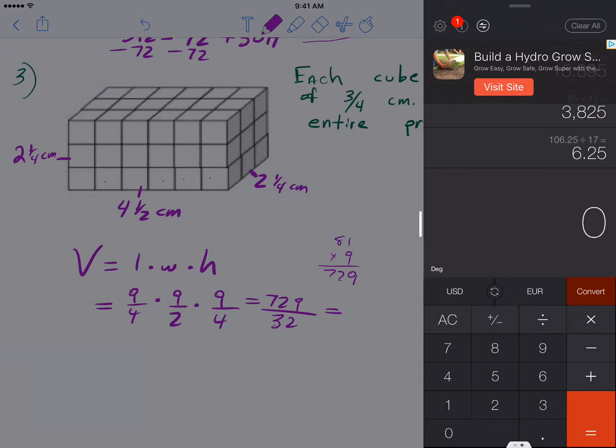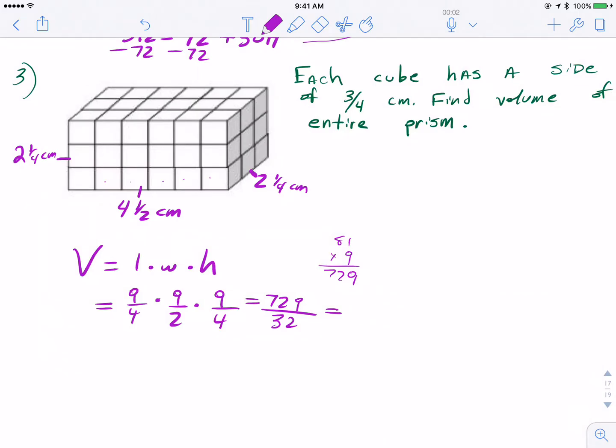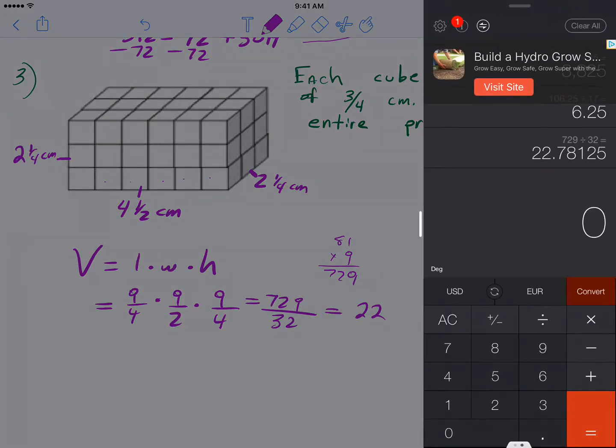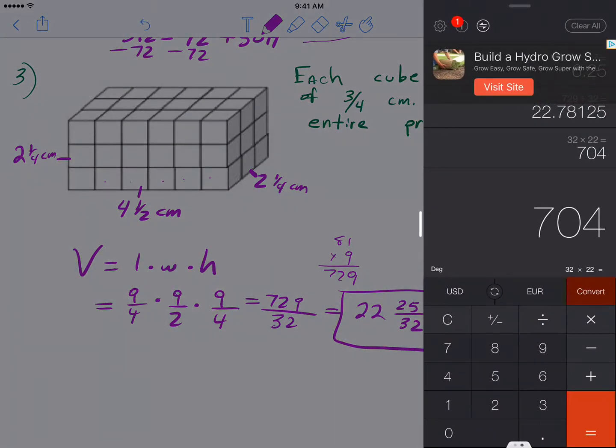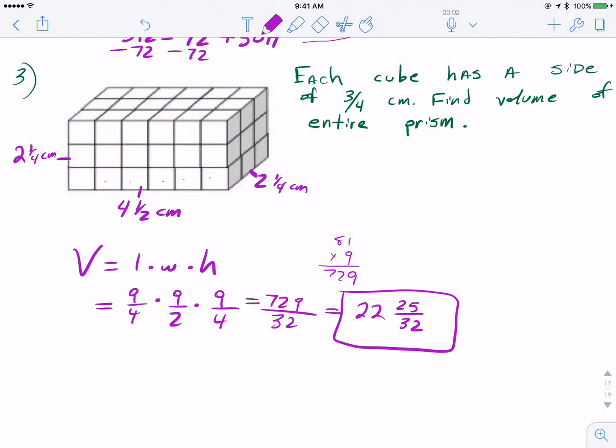And then if we want, we could check what this is. 32 times 22 is 704, so there's 25 30-seconds left over, 25 over 32. Even though I'm using a calculator, I can still check. So what I did, I saw that 32 went into 729, 22 times, and I kind of used that to help me find my remainder. So that's 704, meaning there's 25 of the 30-seconds left over, 25 over 32. That would be the volume, we want to include units of course, so centimeters cubed, or cubic centimeters.